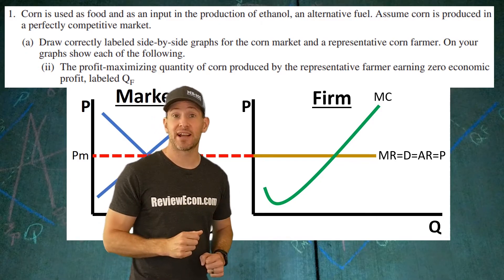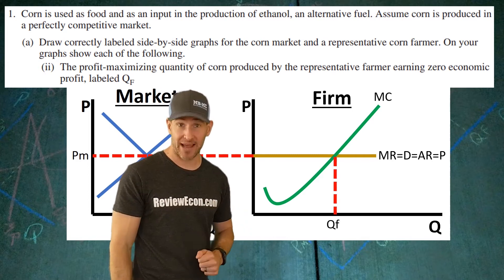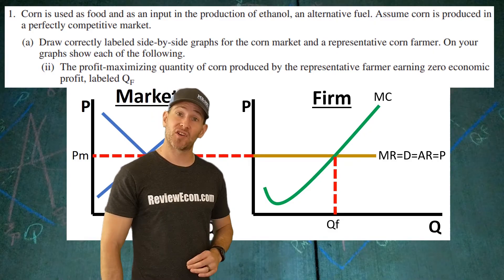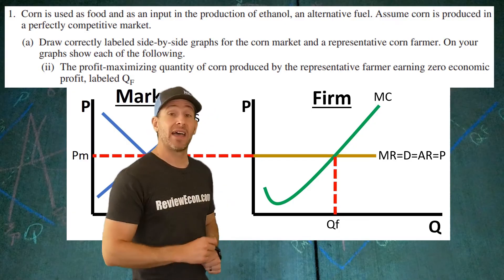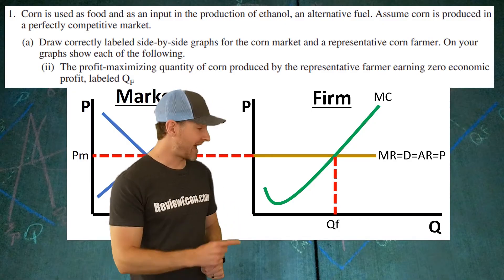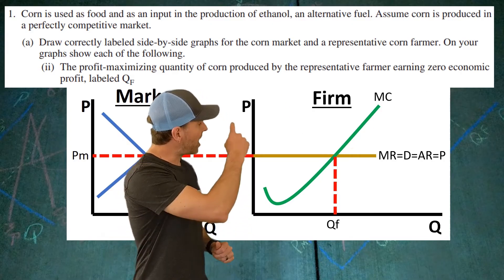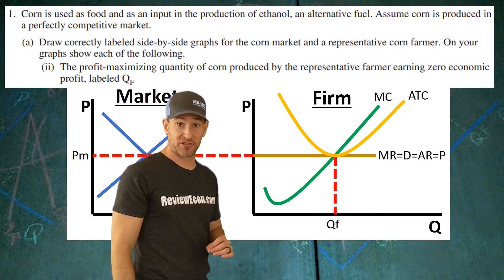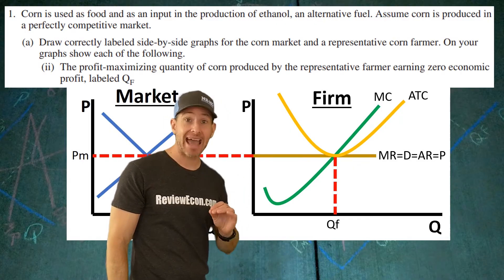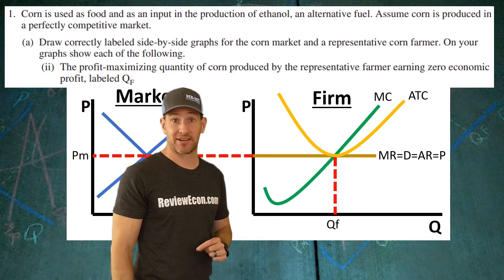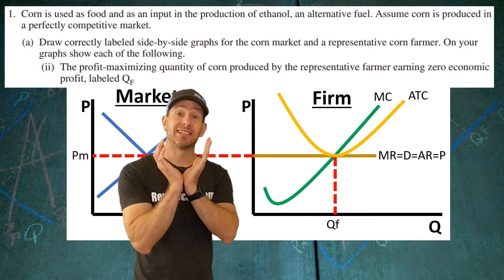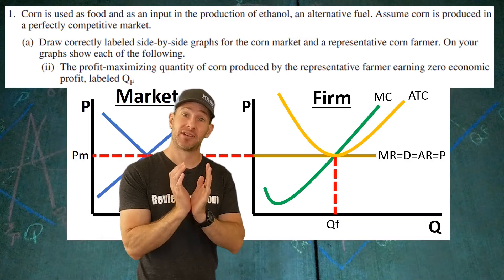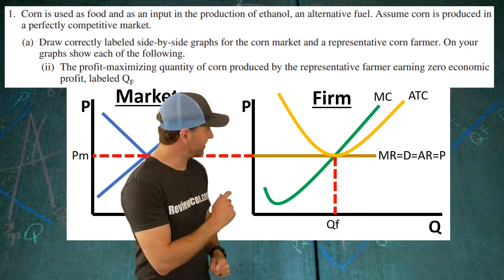Where those two curves intersect, drop down — that is your MR equals MC profit maximizing quantity. Label that in. Because this firm is earning zero economic profits, we need the average total cost to be equal to the price at that profit maximizing quantity. Draw in your average total cost curve hitting that intersection where marginal revenue equals marginal cost. The ATC needs to be at its minimum point there. Draw a relatively steep, almost V-shaped average total cost curve — it helps with shading later. If you have that, you're going to get your points.